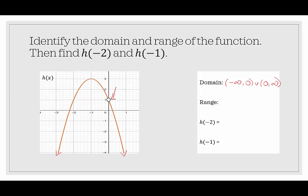For the range, there's no least value — it keeps going down to negative infinity. It goes all the way up to 3, which is included, so we use a bracket. I want to be careful about the undefined point at 0, but the y value of 1 does exist elsewhere on the graph, so it is part of the range and is included. The range is (−∞, 3].